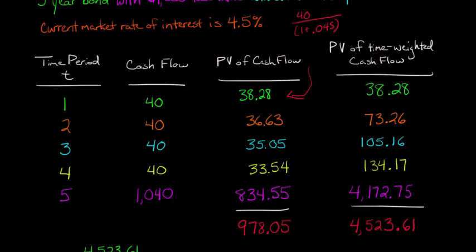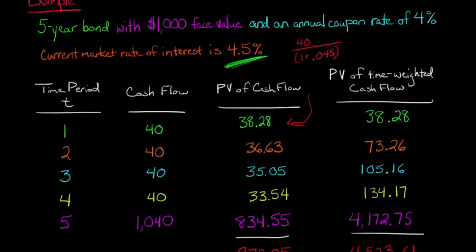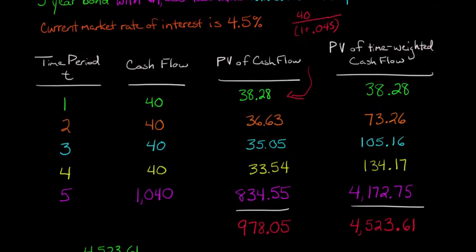Now, to get at the price of the bond, well, the price of the bond is just the present value of the cash flows. Not the time-weighted ones, just the regular old-fashioned present value of the cash flows. So we sum up all these numbers here, and that gives us $978.05. This makes sense that the bond is trading at a discount because the market rate of interest is higher than what the coupon rate is. So people can get a higher rate of interest on the market than what our bonds pay. So our bonds are trading at a discount for $978.05.